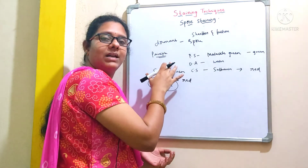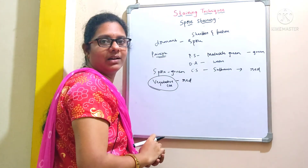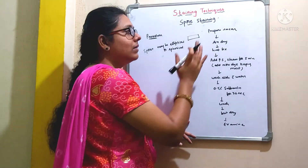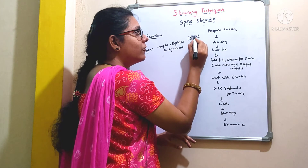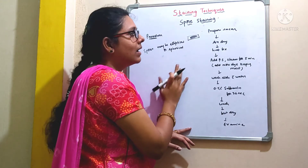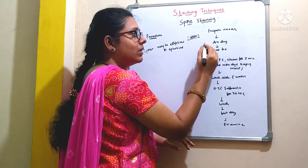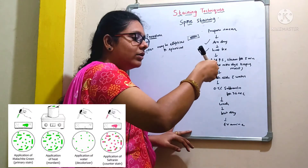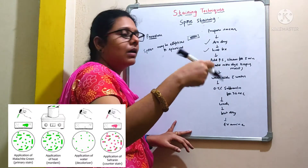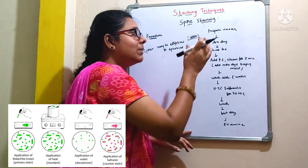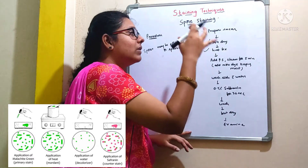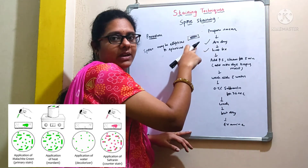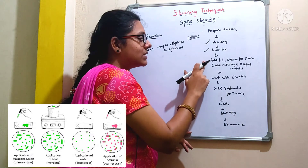Now let us discuss the procedure of spore staining. You need to take a clean glass slide and prepare a smear with the help of an inoculating loop. After preparation of the smear, you have to air dry and then perform heat fixing by passing the slide over the flame. Heat fixing adheres the bacterial cells onto the slide and kills the organism to increase acceptance and penetration of the dye.